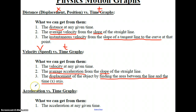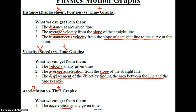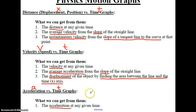Our last type of graph is the acceleration versus time graph. Our symbol for acceleration is A versus T — these are AT graphs. We can only get the acceleration at any given time. They are the most limited type of motion graph as far as the information we can attain from them, and I'll demonstrate this as we start to do the various graphs for all the types of motion.